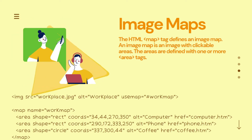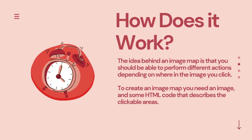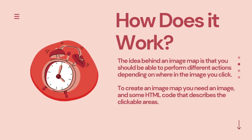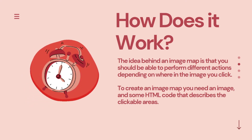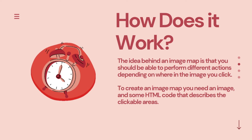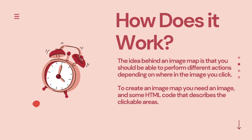Now we will see all these details in detail. Why do we use image maps? I gave you an example of India's map earlier. If we click on a particular location, and according to that location we want to perform different kinds of actions, we can use an image map there. To create an image map, you need an image, and along with that you need some HTML code that will describe those clickable areas.